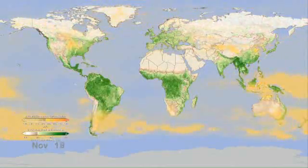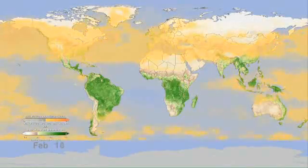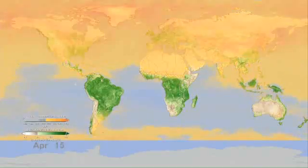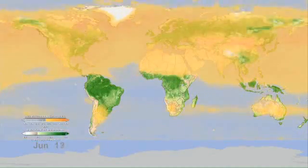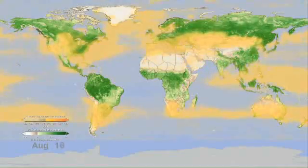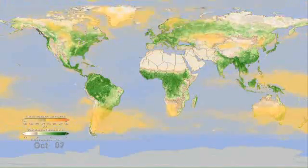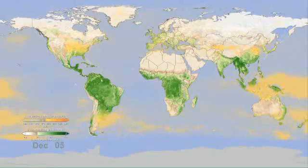Carbon dioxide builds up in the northern hemisphere during the winter months when trees and plants are losing their leaves. And in the summer when greening occurs, plants, through the process of photosynthesis, absorb the carbon dioxide from the atmosphere.